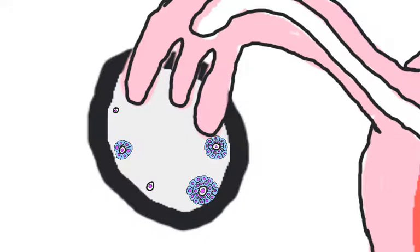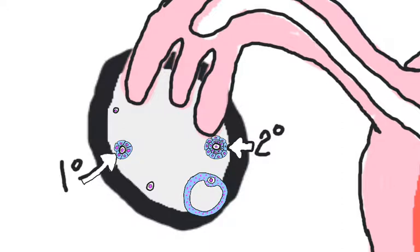A primary follicle has one layer of cells surrounding the egg. A secondary has two layers. Months later, a vesicular follicle may form, which has so many cells that a big fluid-filled gap begins to develop.